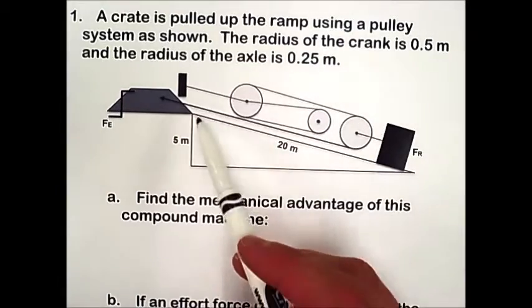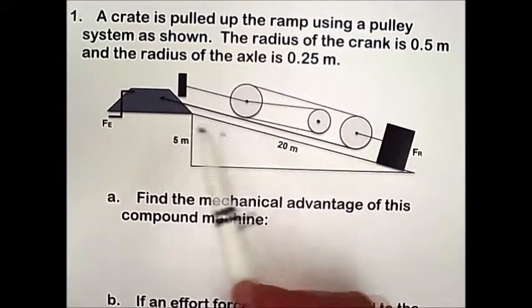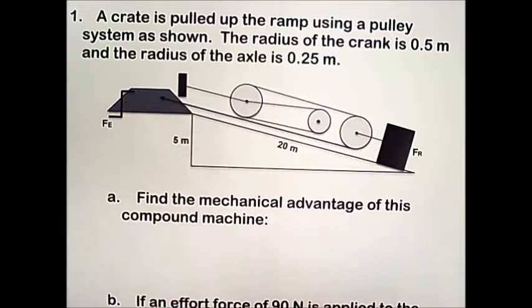So we have an inclined plane, we have a pulley system, and we also have a wheel and axle, or a winch.